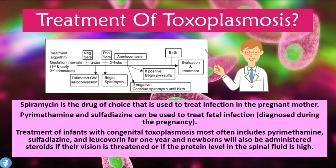Spiramycin is the drug of choice used to treat the infection in the pregnant mother. In the treatment algorithm, moms are tested early in the first and second trimesters. If at four weeks we get a negative serology and then four weeks later we get a positive serology, we can begin the pregnant mom on spiramycin. We can then do amniocentesis, and if positive, the drugs of choice are pyrimethamine and sulfadiazine.